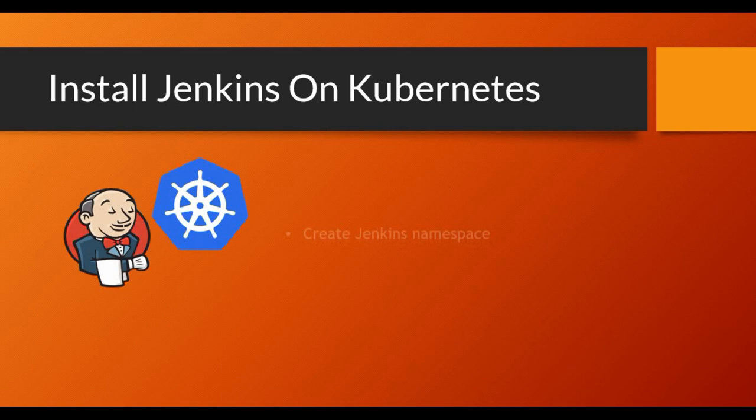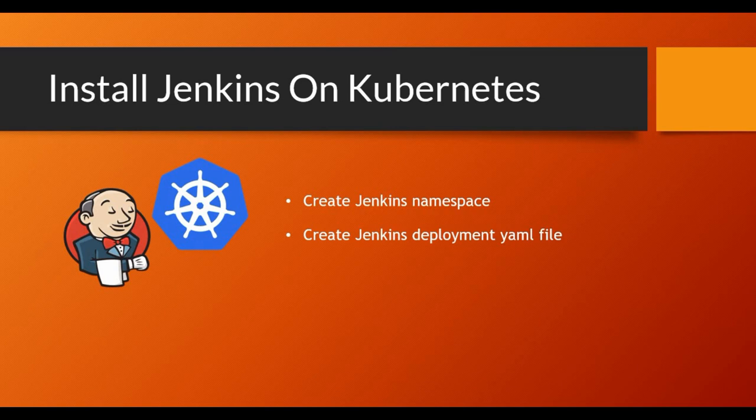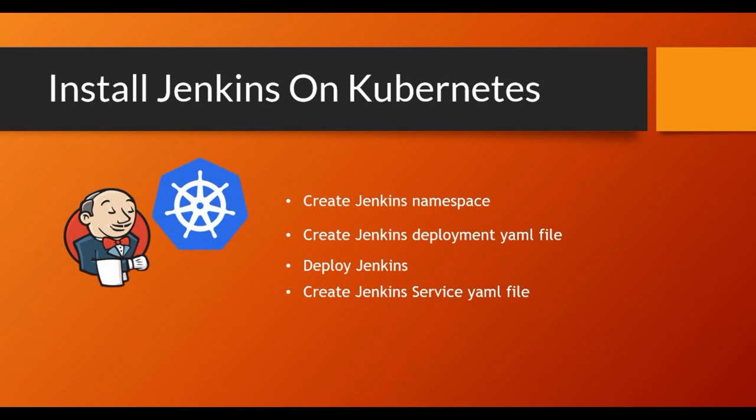In this installation tutorial for Jenkins on Kubernetes, we will first create a Jenkins namespace, then write the Jenkins deployment YAML file. I will also provide the GitHub link so you can download the YAML file. We'll deploy Jenkins so the deployment is created, and then create the Jenkins service YAML file.